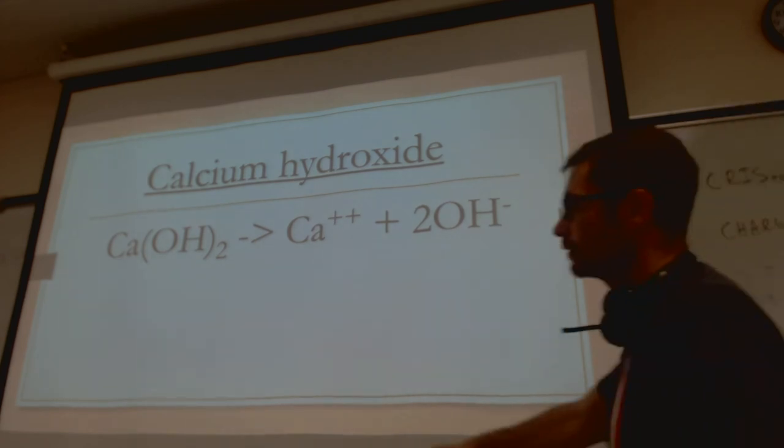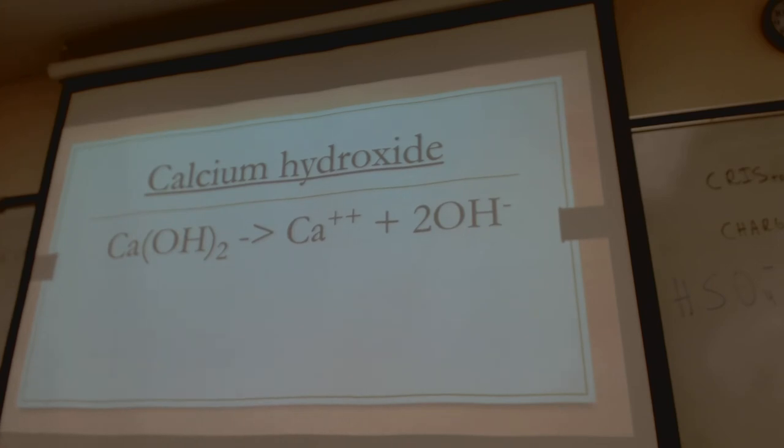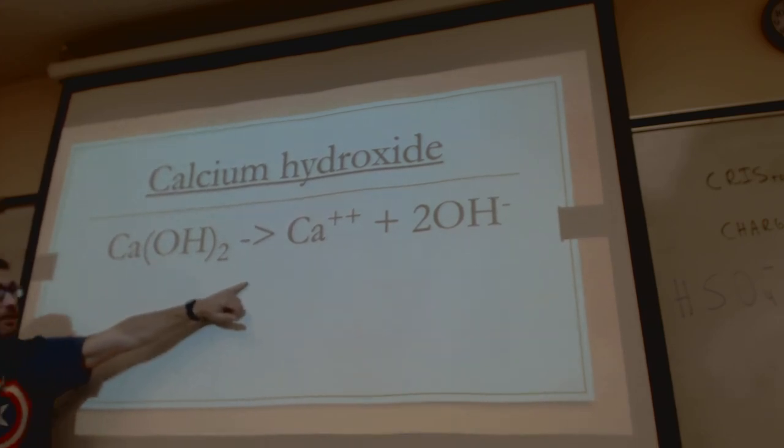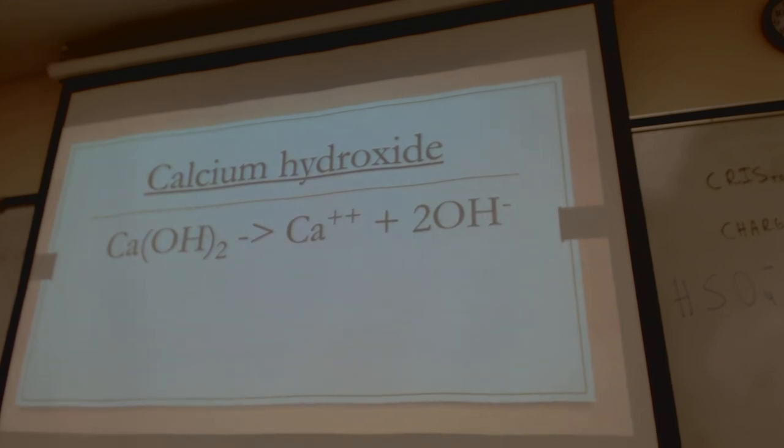When you've got two hydroxides you put a 2 here, it's easy, you don't have to think too much. Calcium has a charge of 2+, so that's why you have a 2 here, and when it dissociates you've got a 2 here because you've got two hydroxides here.